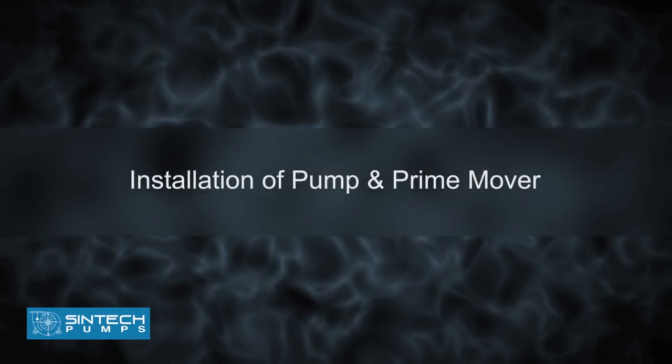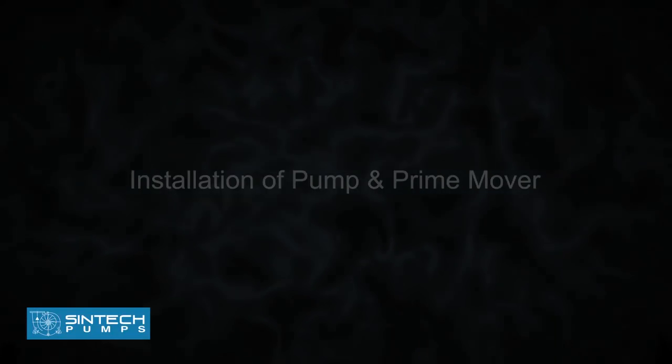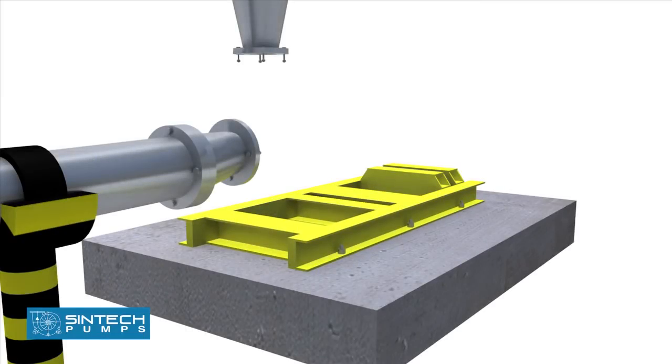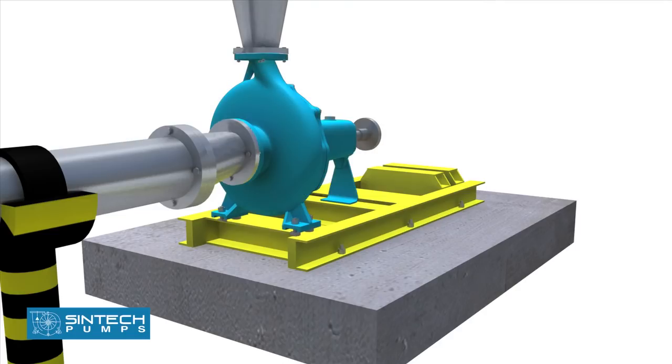Installation of pump and prime mover. The pump and motor unit needs to be fitted firmly onto the base frame using nuts and bolts before fitting in any pipes. It is essential to confirm the distance between the shaft ends.